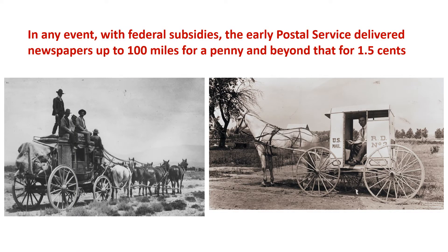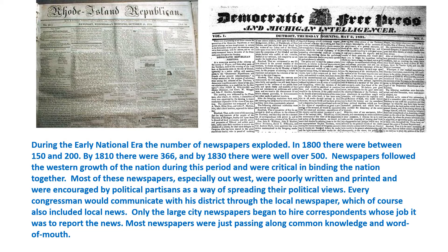With federal subsidies, the early United States Postal Service delivered newspapers up to 100 miles for a penny, and beyond that for a cent and a half. In the early national era, the number of newspapers exploded. In 1800, there were between 150 and 200. By 1810, there were 366, and by 1830, there were well over 500. Newspapers followed the western growth of the nation during this period and were critical in binding the nation together. Most of these newspapers, especially out West, were poorly written and printed, and were encouraged by political partisans as a way of spreading their political views.